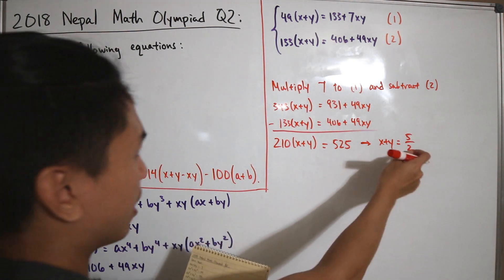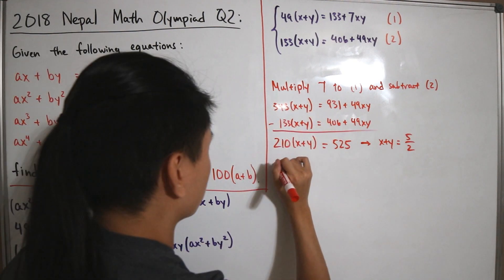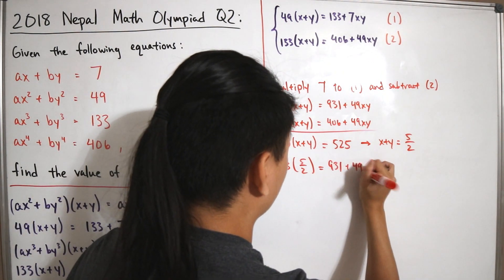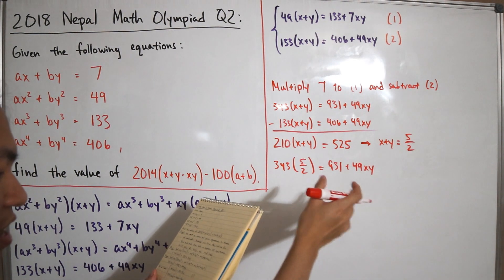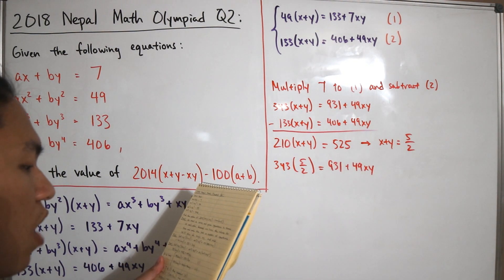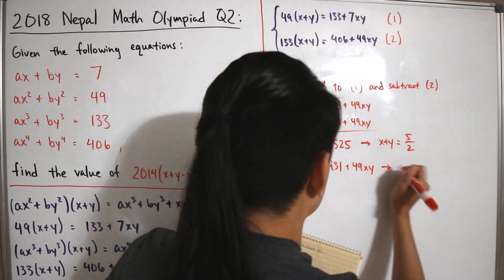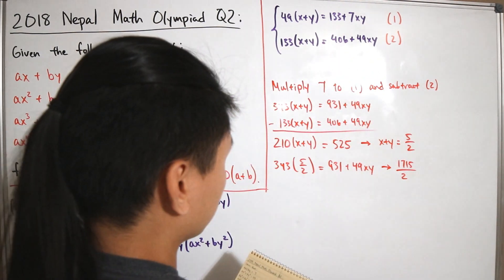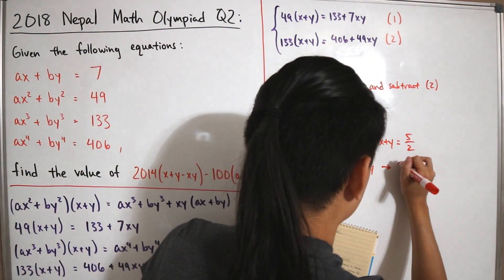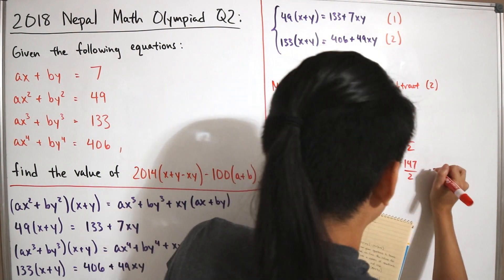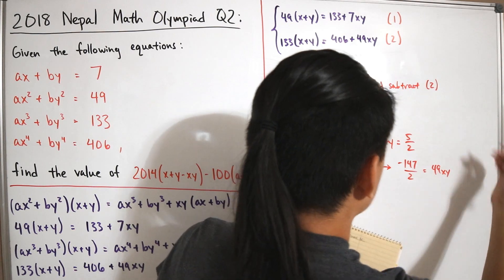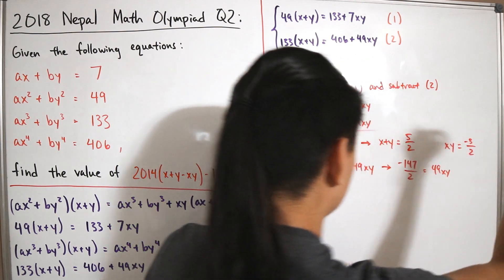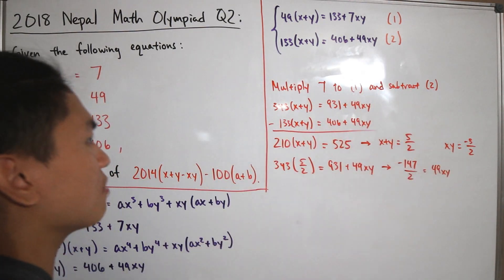Plugging x + y = 5/2 back into Equation 1: 343 × (5/2) = 931 + 49xy, giving 1715/2 = 931 + 49xy. Subtracting 931 gives -147/2 = 49xy, so dividing by 49 yields xy = -3/2.